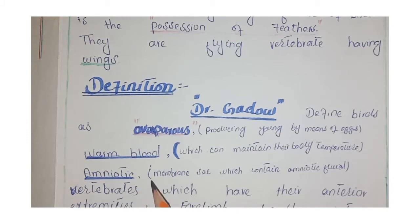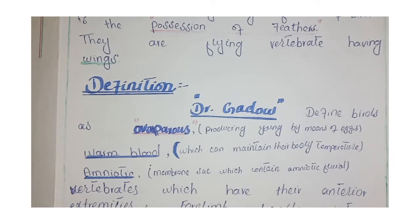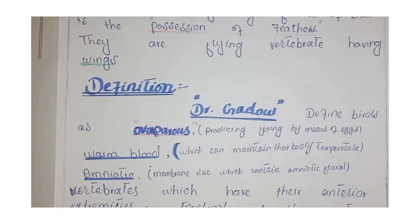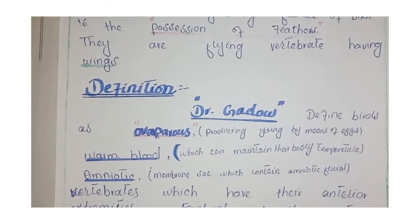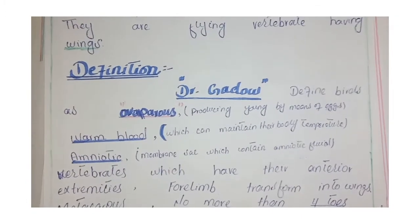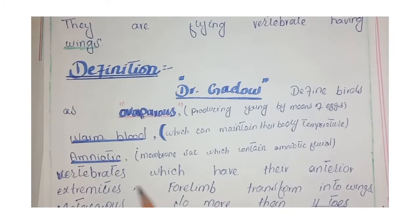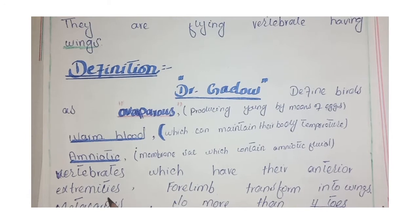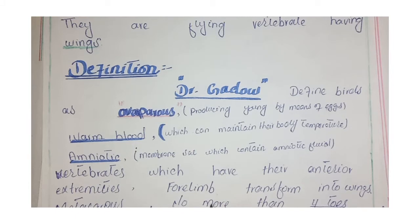The amniotic fluid is enclosed in membranes which help to nourish and protect the embryo. Birds are vertebrates whose anterior extremities — the forelimbs — are transformed into wings, which is what enables them to fly.